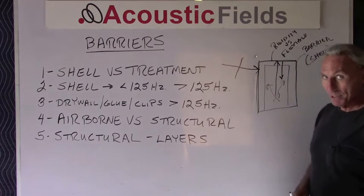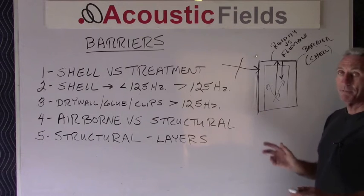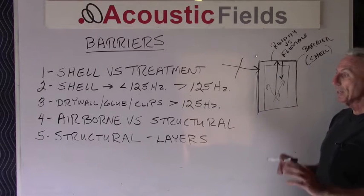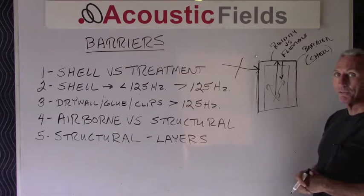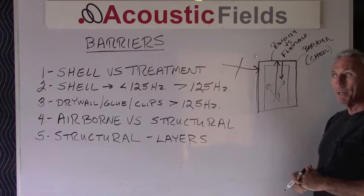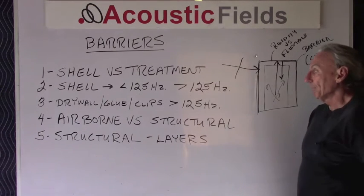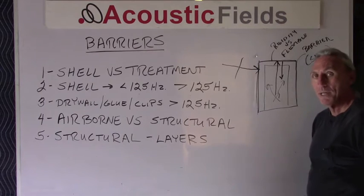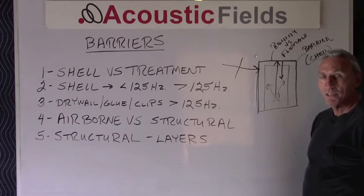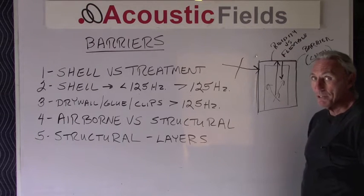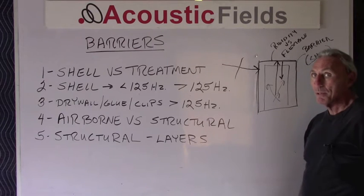Shells come in two flavors: those that work below 125 hertz and those that work above 125 cycles. Completely different approaches to the build, completely different results in terms of how much energy gets through and how much energy stays out. There's a common technique out there that people use — it's the double layer of drywall with green glue and resilient clips. Good technology.